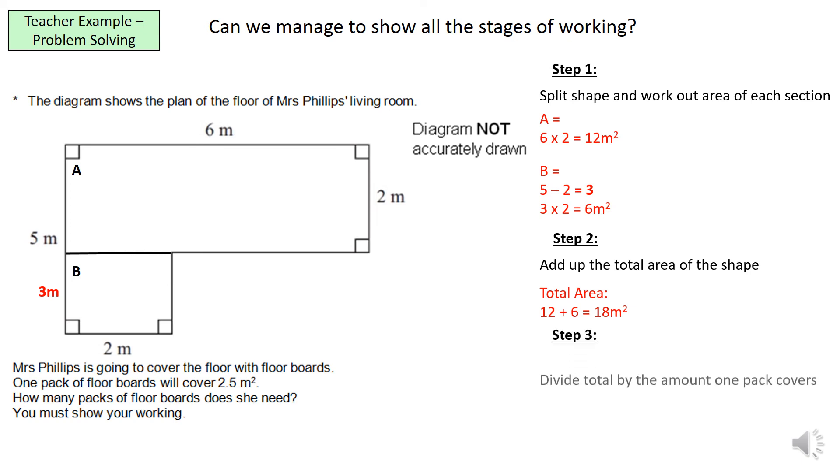Now, this is the key part, step 3. We need to divide the total, which is 18 meters squared, by the amount that one pack covers. So, we're doing 18 divided by 2.5 and that equals 7.2. Now, if we were to put our final answer that Mrs. Phillips needs 7.2 packs, that would be incorrect. We would lose a mark because there's no such thing as 0.2 of a pack. So, we need a whole number. Now, the question to ask is, if we say Mrs. Phillips needs 7 packs, will she have enough floorboard to cover the entire living room? And the answer to that simply is no, because she needs slightly more than 7 packs. So, therefore, Mrs. Phillips will need 8 packs.